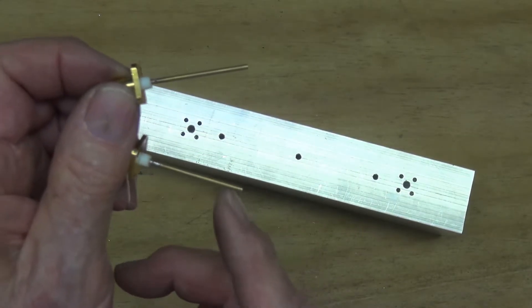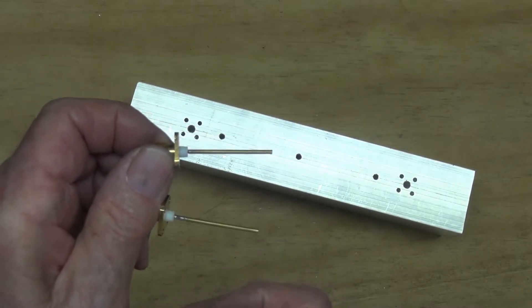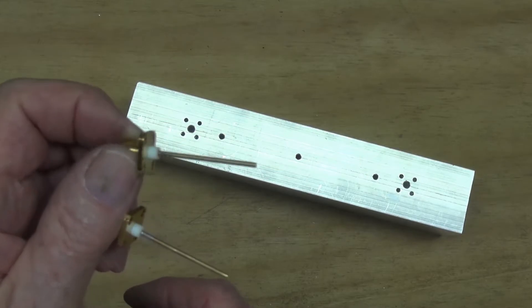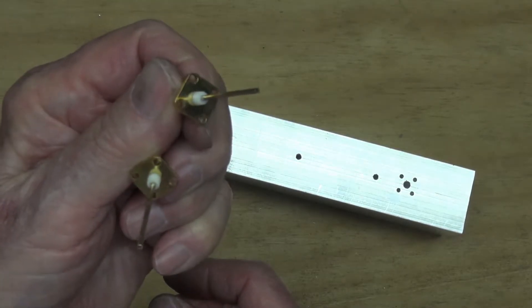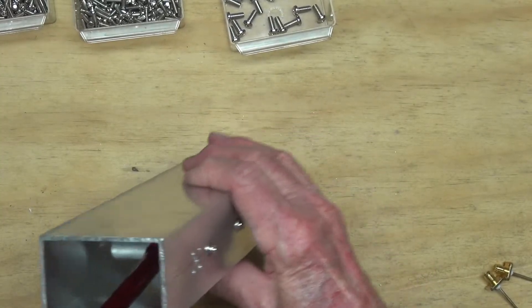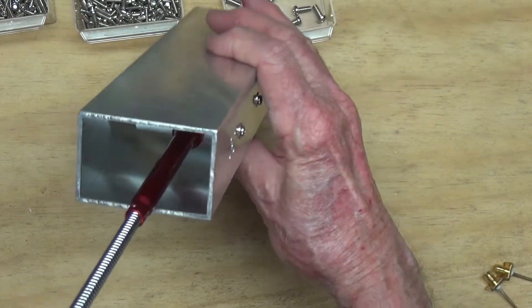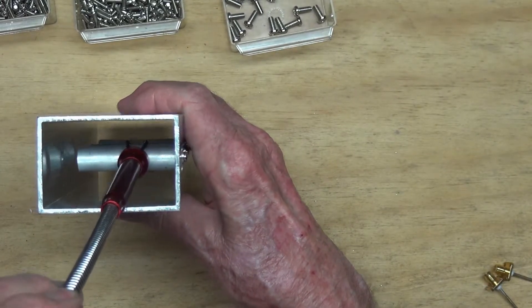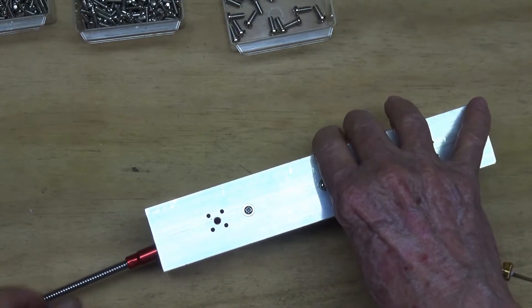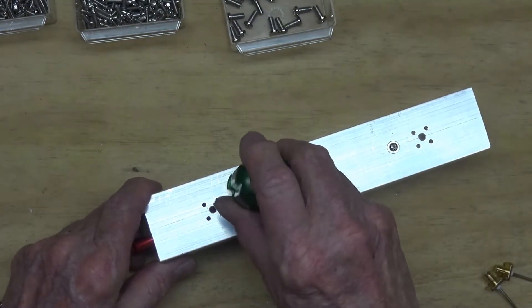The next step is to mount the fingers inside the aluminium section, and then we'll mount the SMA sockets. I'm screwing in the last of the fingers, and I'm using this tool here to hold it in place. You don't really need to on the outside one, but you certainly need it on the centre one.